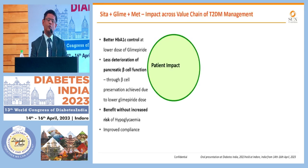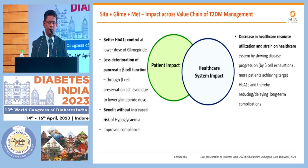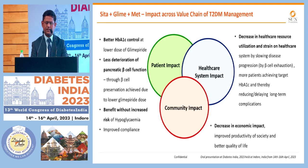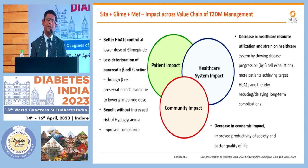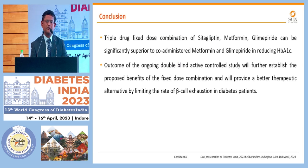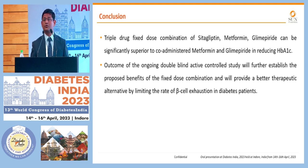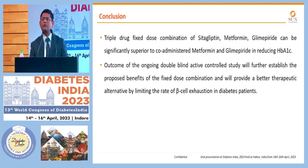In terms of the overall benefit of this combination: better HbA1C control for patient impact and overall healthcare impact. Strictly targeting HbA1C can avoid cardiovascular complications and reduce the burden on healthcare. This combination will provide a better alternative in terms of compliance as a triple drug therapy and better glycemic control in uncontrolled diabetic patients — especially in the Indian scenario where patients on high doses of Glimepiride can have the dose reduced while achieving similar HbA1C reduction. Thank you.